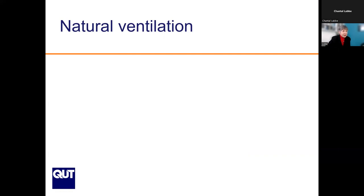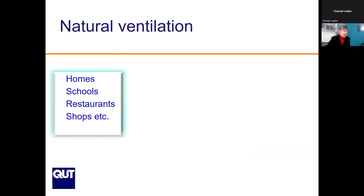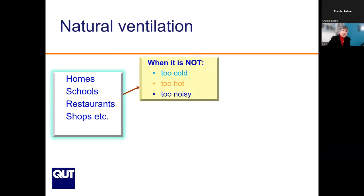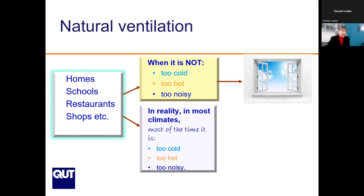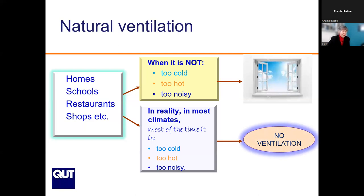Let's concentrate for a moment on opening windows — natural ventilation — which is a very common type of ventilation in schools. Most schools in Australia, in different states, are naturally ventilated. When it is not too cold, not too hot, not too noisy, not too polluted and safe, the windows are open. However, the reality is that in most climates, most places and most of the time, there is some kind of problem. Windows are closed, which means there is no ventilation. We can essentially equate natural ventilation in many situations to no ventilation.